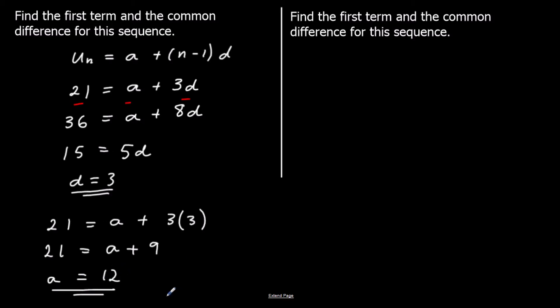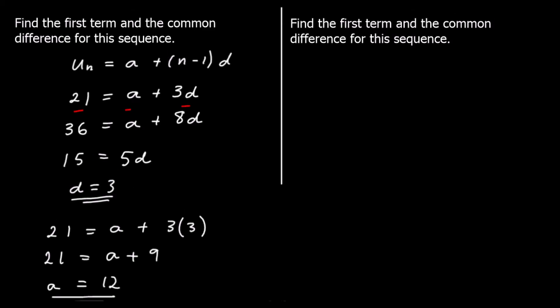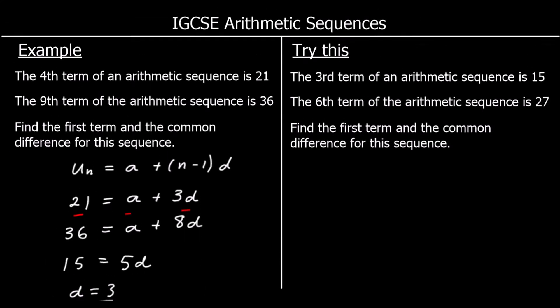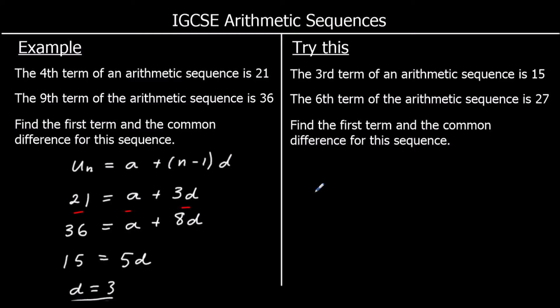Here's one for you to try — pause the video and give it a go. Using the same formula uₙ = a + (n−1)d, we're told the third term is 15 and the sixth term is 27, and we need to find a and d.